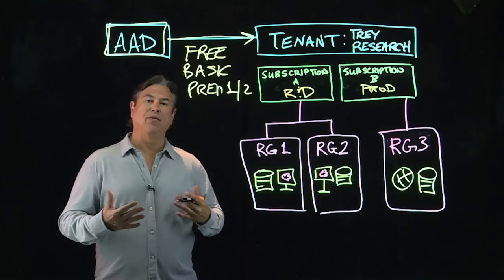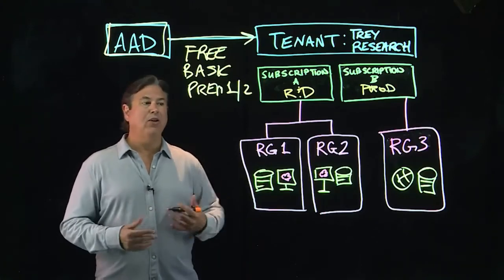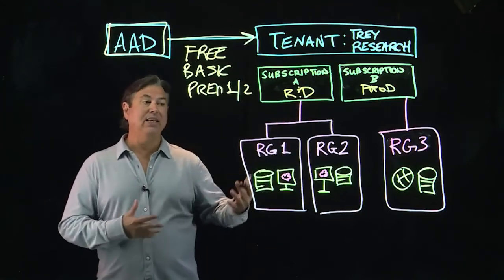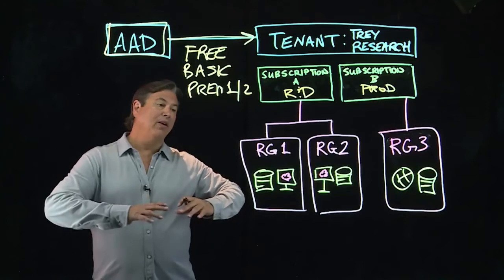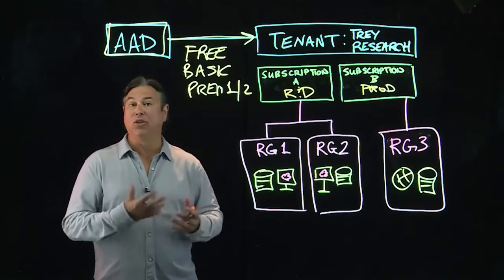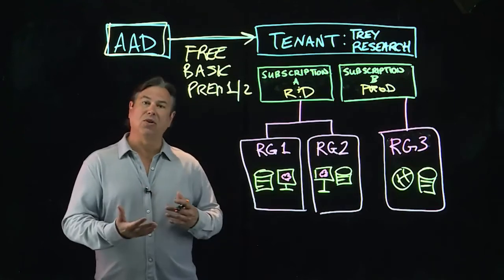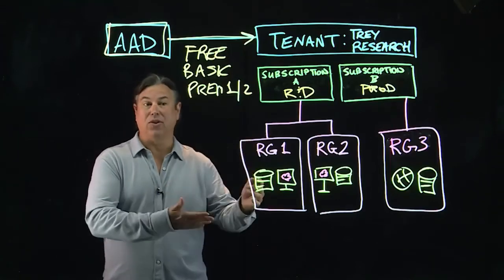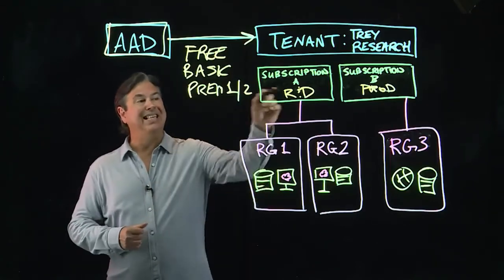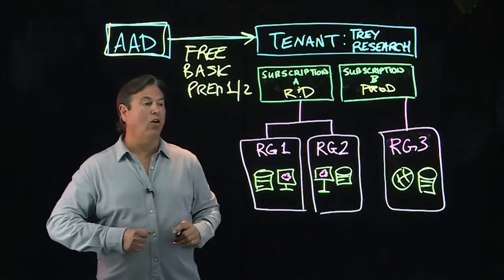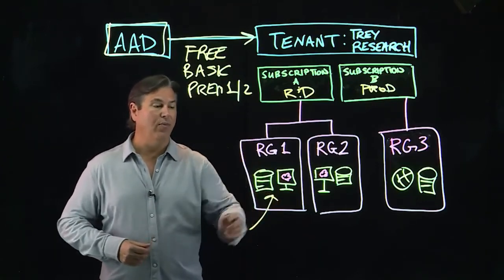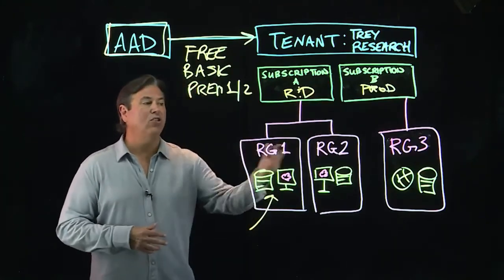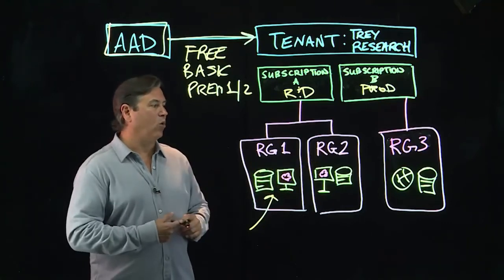At the subscription level, you're going to have resource groups, and you can have one or more resource groups. Subscription A (R&D) might have multiple resource groups — RG one for research and RG two for development — and within those you have all your different Azure resources. Subscription B (production) might just use one resource group containing all of their resources.